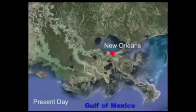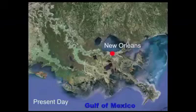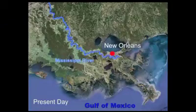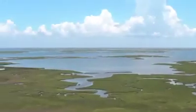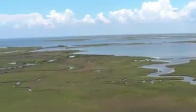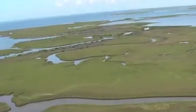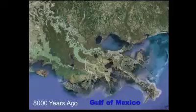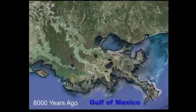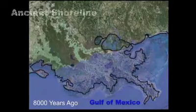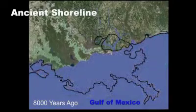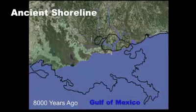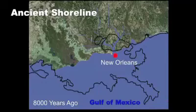The Louisiana coast is a dynamic system built in part by the action of the Mississippi River. To understand how subsidence affects the Mississippi River Delta and its wetlands, we first have to go back a few thousand years. Because glaciers were melting 8,000 years ago, sea levels were higher at that time, so much of the present-day coast was underwater. Where New Orleans is located today was also under the sea.